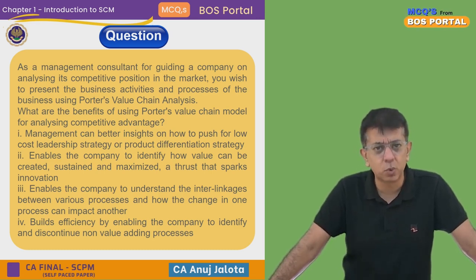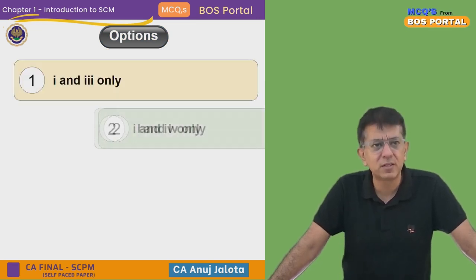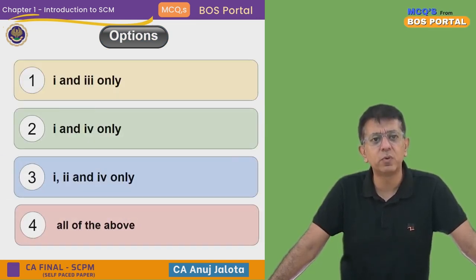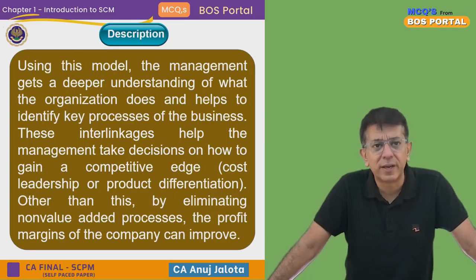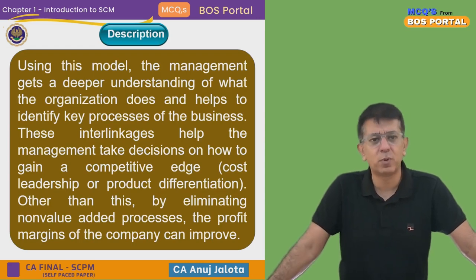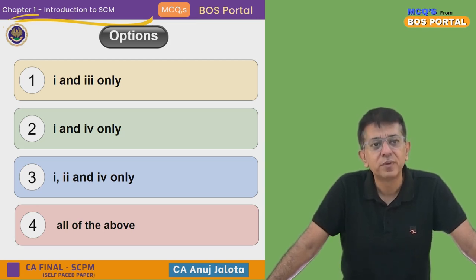So all four — first, second, third, and fourth — are advantages. The answer options include one and two, one and four, one two and four, or all of the above. Since I have explained each and every one of them, you can pause here and try to answer. The correct answer should be all of the above — option four.